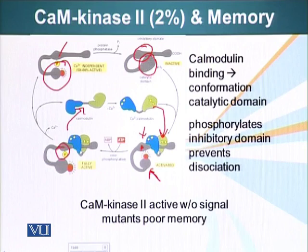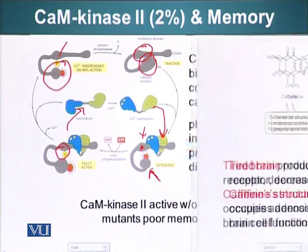Experiments have also shown that if cam kinase 2 is mutated in mice, they have poor memory. Here is another experiment that suggests that cam kinase 2 is an important protein in storing memory.